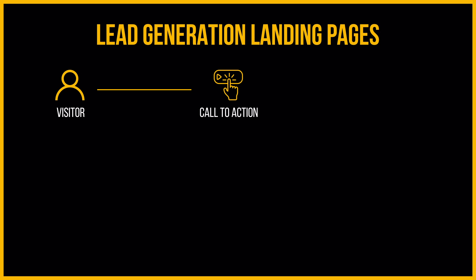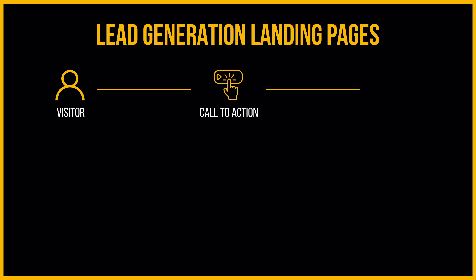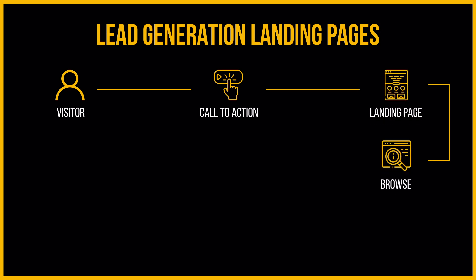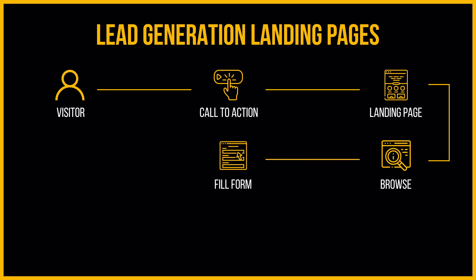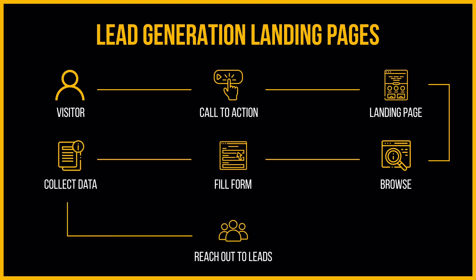Lead generation landing pages work somewhat like this: a visitor sees a call to action and ends up on a landing page. The visitor can then browse the page, and if the information is trustworthy, convincing, and relevant, the prospect could fill out the form and become a lead. This lead is then stored and passed via email or some notification. Based on the data you collect about the lead, you can then reach out to them and start your selling process.